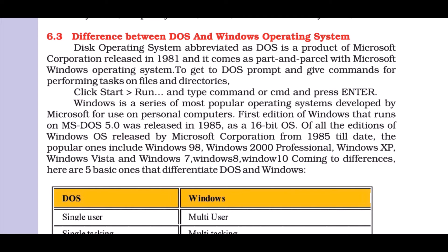Now let's talk about Windows — the operating system most commonly used in computers today. Windows is a series of the most popular operating systems developed by Microsoft for use on personal computers. The first edition, running on MS-DOS 5.0, was released in 1985, where you could open a window page through Explorer. It was a 16-bit operating system. When Windows 95 came in, it changed everything — the system started with Windows itself.